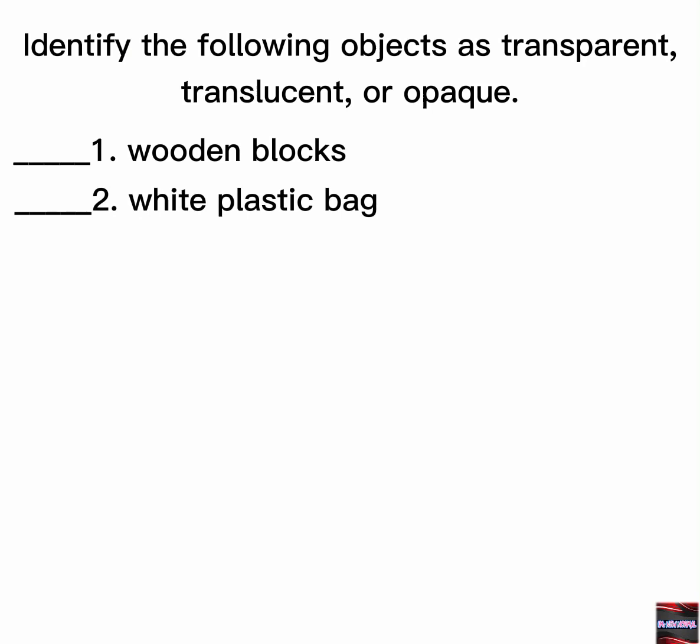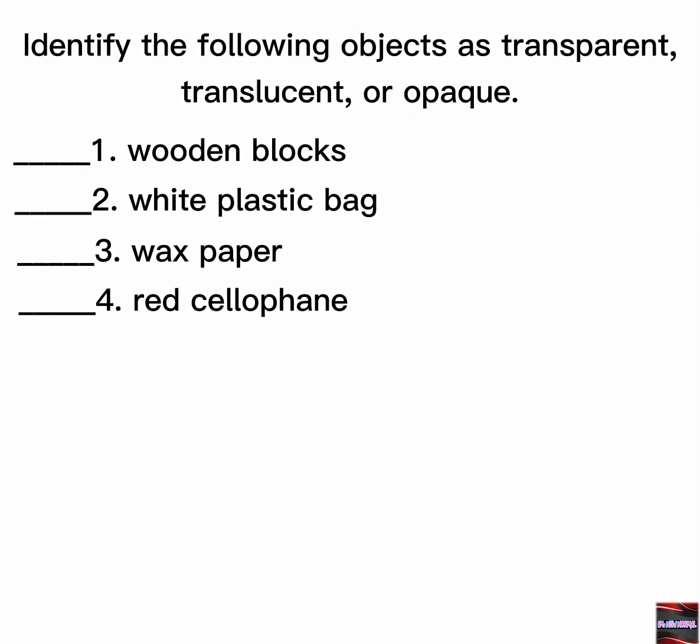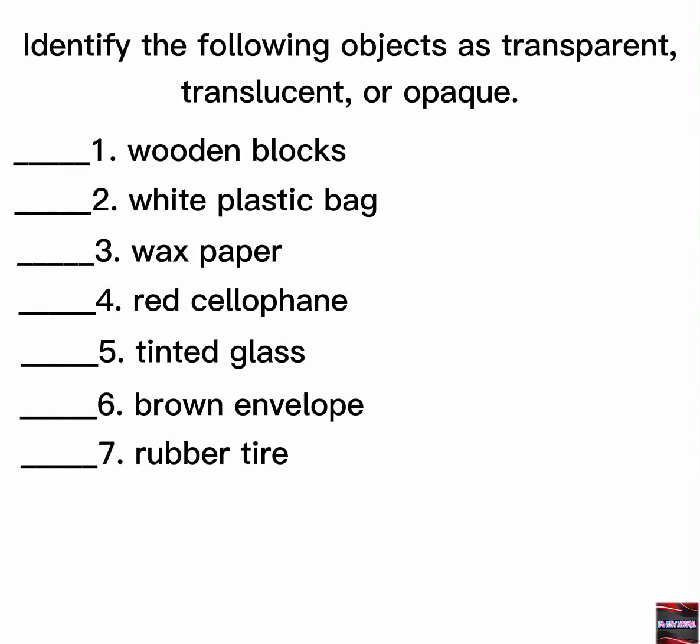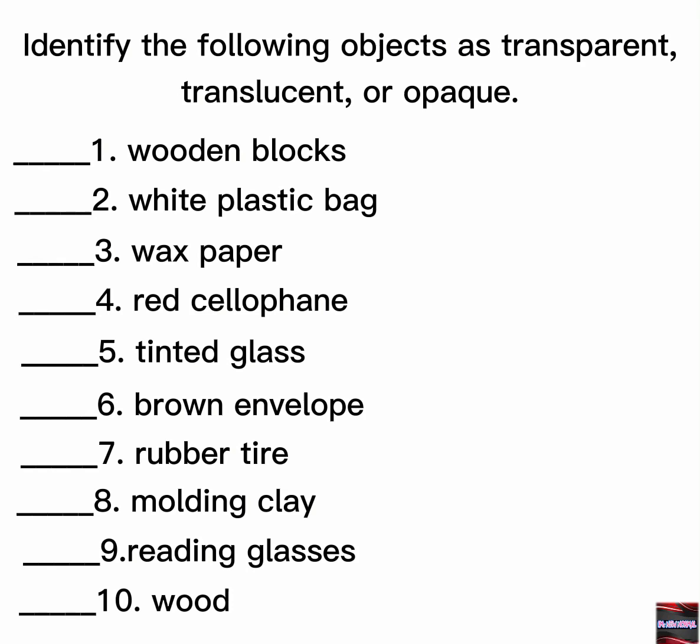Let's practice. Identify the following objects as transparent, translucent, or opaque. 1. Wooden blocks, 2. White plastic bag, 3. Wax paper, 4. Red cellophane, 5. Tinted glass, 6. Brown envelope, 7. Rubber tire, 8. Molding clay, 9. Reading glasses, 10. Wood.